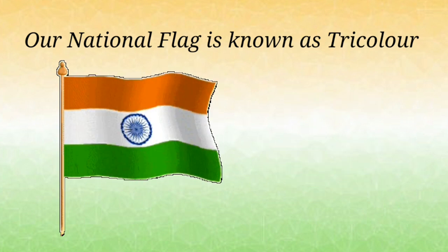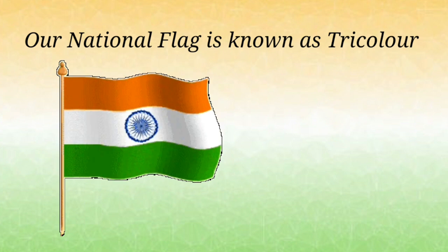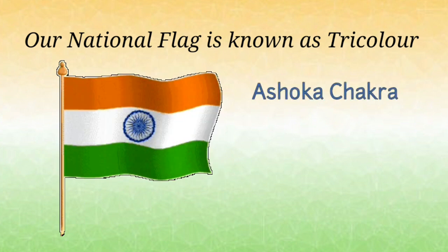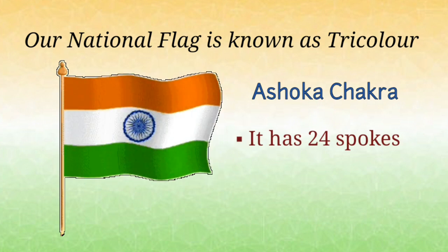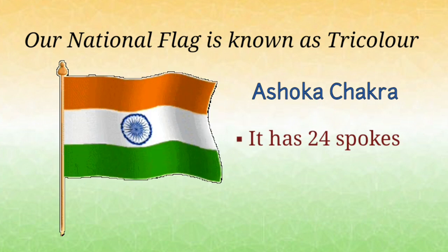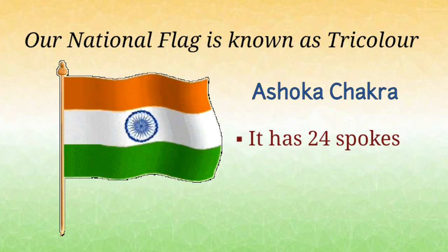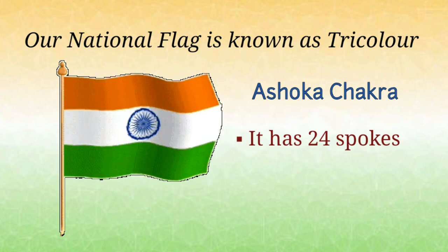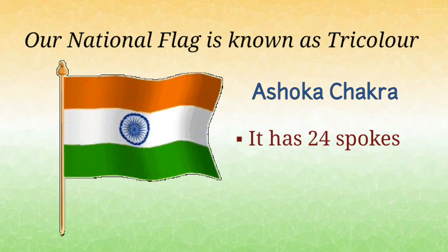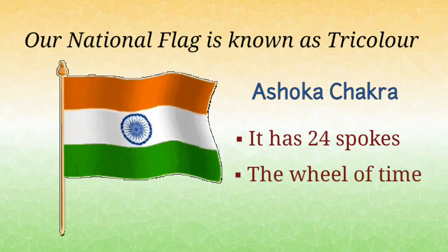In the center of the flag, there is a navy blue colored wheel called the Ashoka Chakra. It has 24 spokes. Each spoke on the chakra symbolizes a principle of life and also corresponds to 24 hours in a day, which is why it is also called the wheel of time.